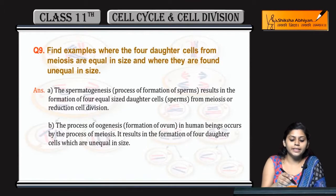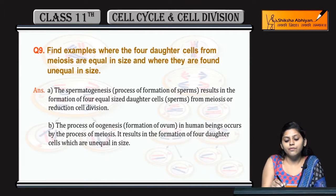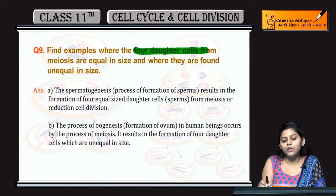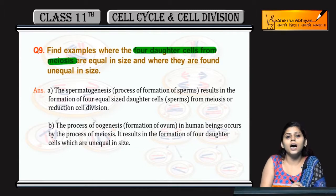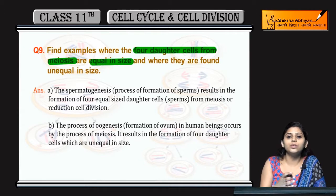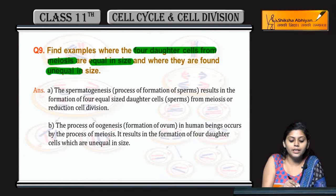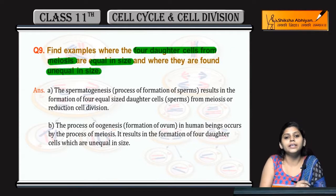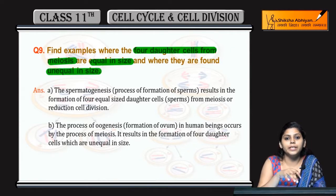Question number 9: Find examples where 4 daughter cells from meiosis are equal in size. When meiosis produces four daughter cells that are equal in size, we will have different examples to tell you.